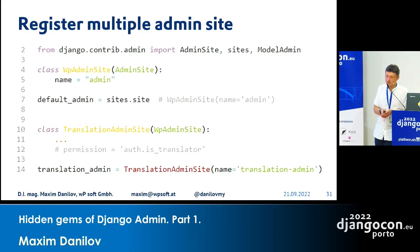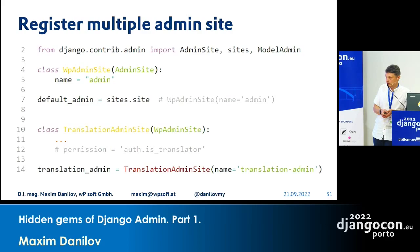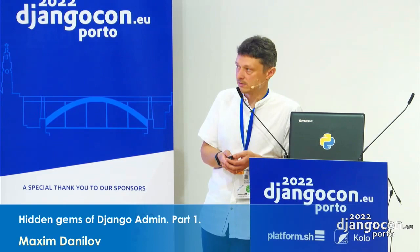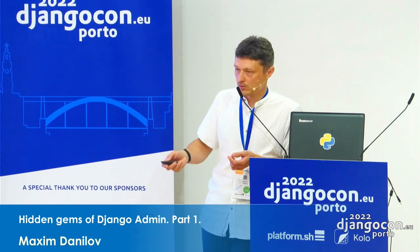Registering multiple admin sites is easy. We should create a new class of admin site, create an instance from it, and the only argument needed is a name for the admin site. A big undocumented feature in Django is that we have one default admin site, and this default admin site is registered with the name 'admin'. This has brought us some problems over the last 10 years, but I know how to solve it.